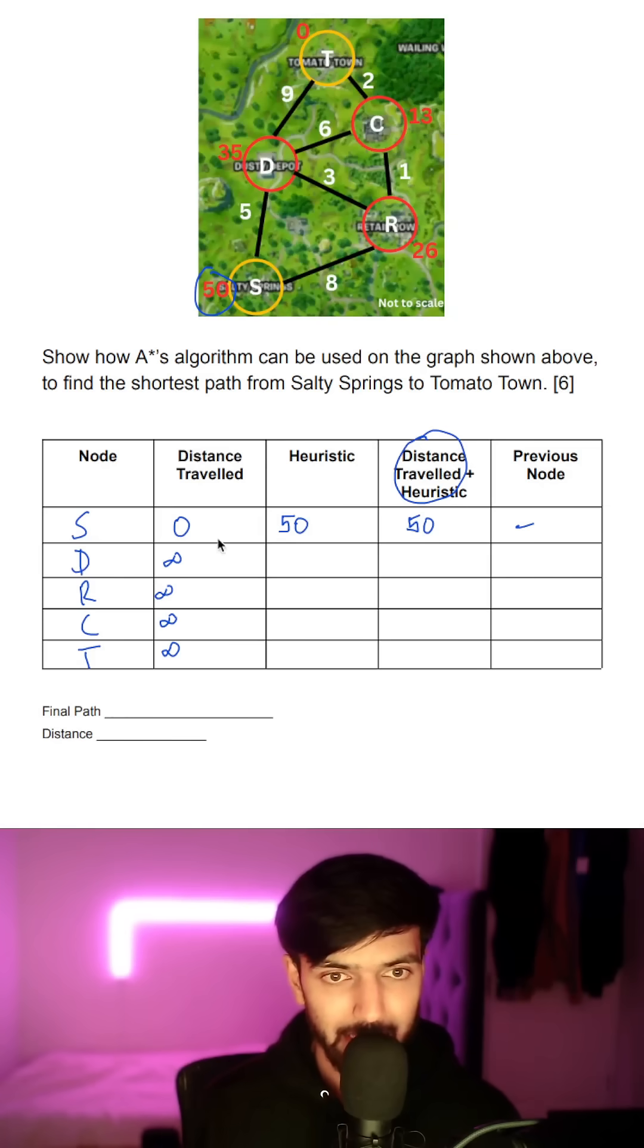Distance traveled to D is 5 and R is 8, 35 and 26. For D which is 40. For R which is 34.